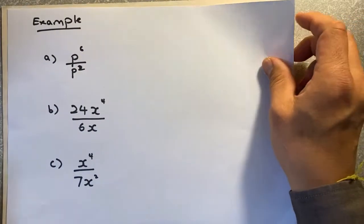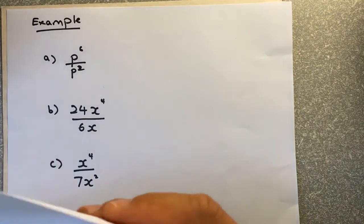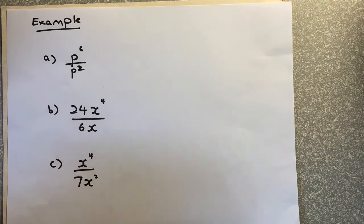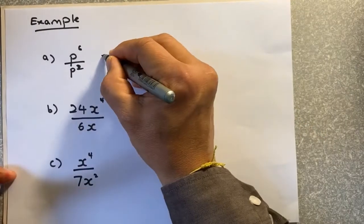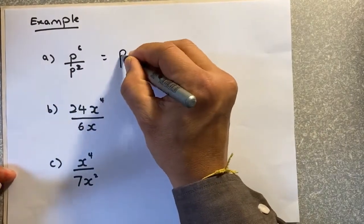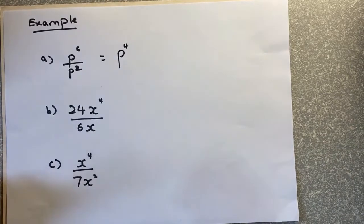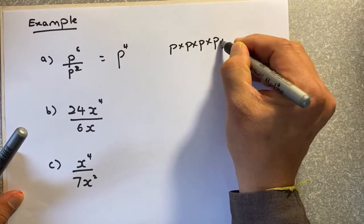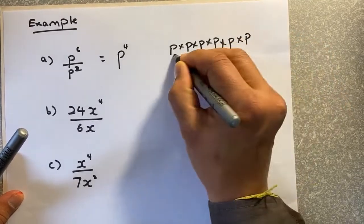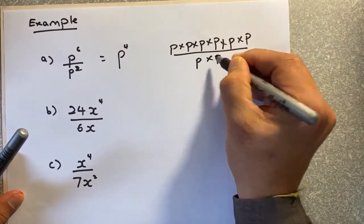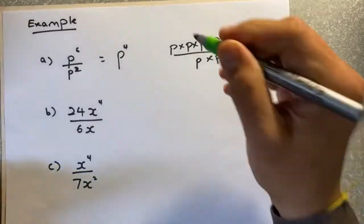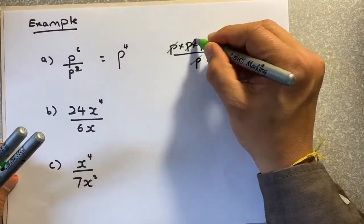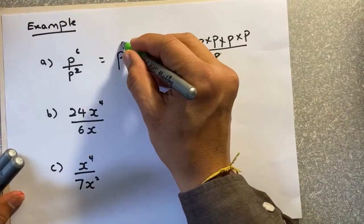This example, we shall look at this example. Have a go. p6 over p squared. Very simple. You just take 6 minus 2, p4. Or you want to do, multiply 6 times, 6 p's. And the denominator is 2 p's. You can actually cancel them out. p and p use your calculator. p divided by p, 1. p divided by p, 1. And the answer is p4.